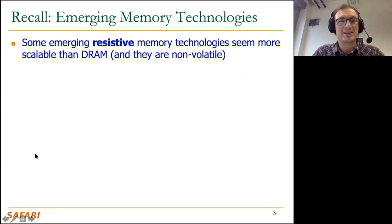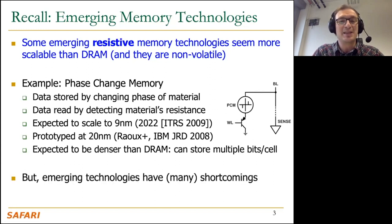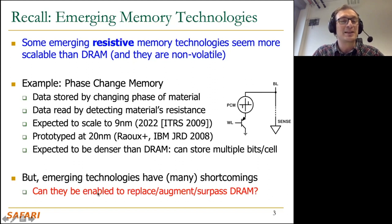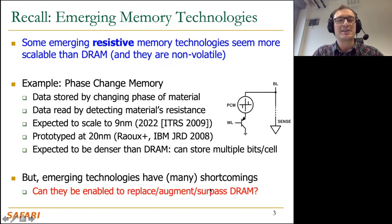Just to jog your memory, we were talking about resistive memory technologies especially. These are more scalable than DRAM because they're not charge-based and they're also non-volatile. We talked a lot about phase change memory. If you really want to delve into the details, I would highly recommend this IBM Journal of Research and Development paper. Emerging memory technologies have many shortcomings but also enable opportunities. The key question is: can we enable them to replace, augment, or surpass DRAM? Main memory is clearly a big bottleneck today.